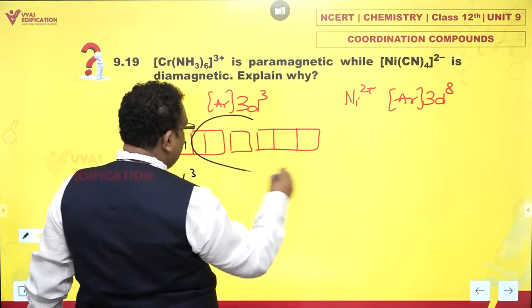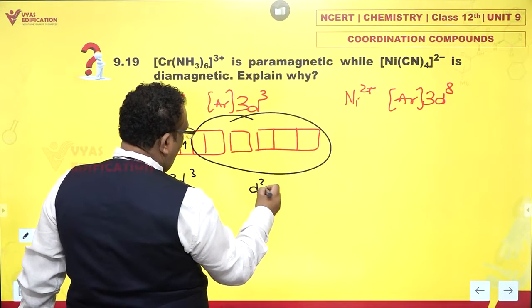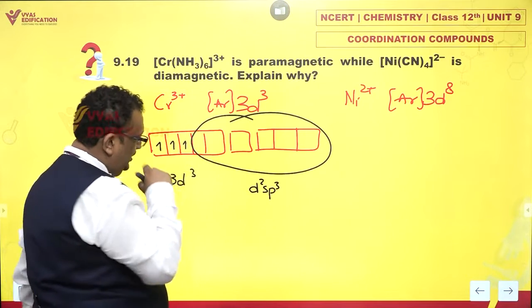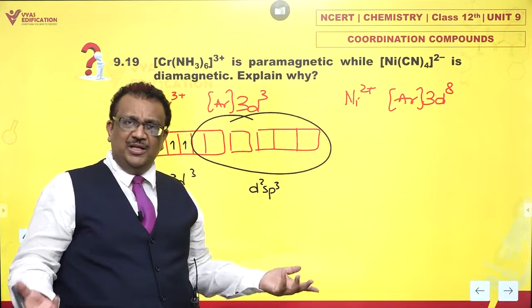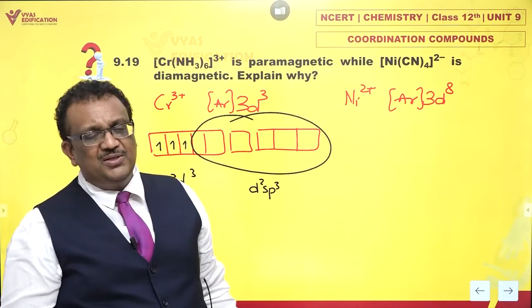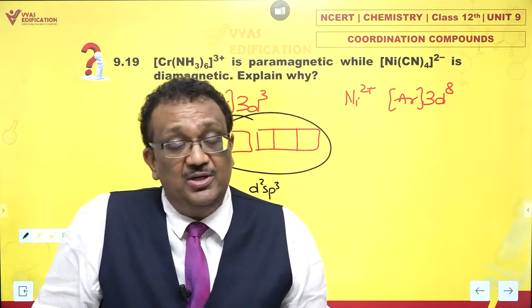It says yes, we have as much space as you need. We are d²sp³ hybridized. And we have 6 lovely orbitals which are ready-made empty. There is no need to force pairing. There is no requirement at all.